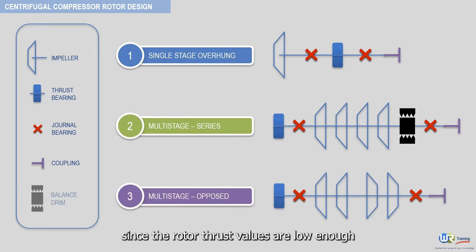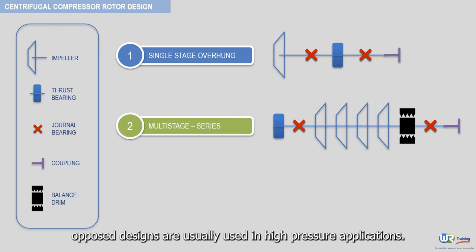Since the rotor thrust values are low enough to be accommodated by a thrust bearing, multi-stage opposed designs are usually used in high-pressure applications.